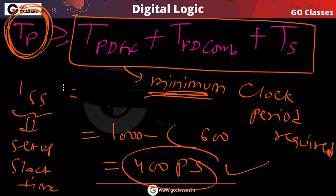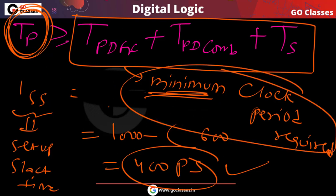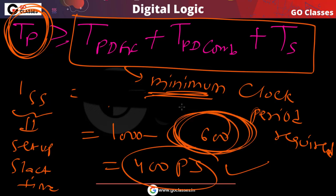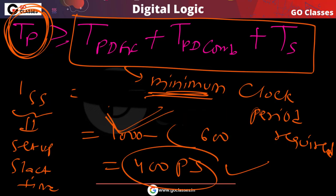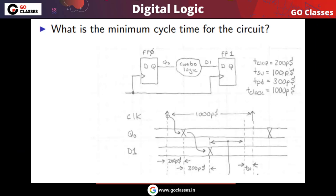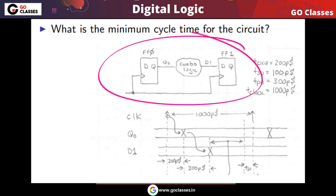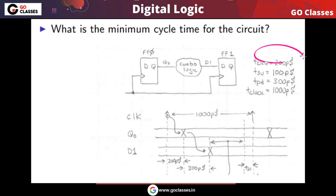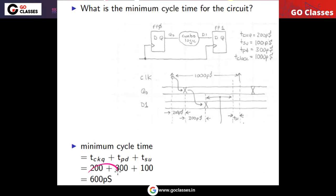For the given example with parameters propagation delay = 200 ps, combinational delay = 100 ps, and setup time = 300 ps, the minimum cycle time is 200 + 100 + 300 = 600 picoseconds. The setup slack time is 1000 − 600 = 400 picoseconds.